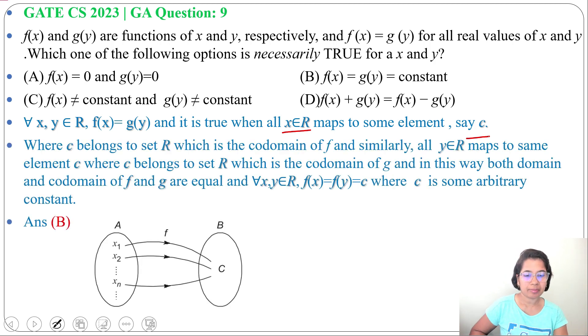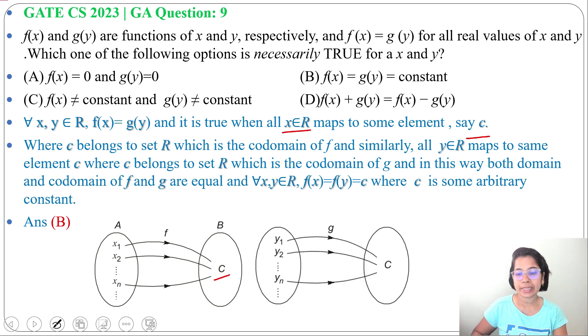Let's see the diagram like this. Here x1, x2 up to xn, so f(x1) maps to some c, f(x2) maps to some c, so c is some arbitrary constant. So f(x) maps to c whereas g(y) like g(y1) maps to c, g(y2) maps to c, g(yn) maps to c.